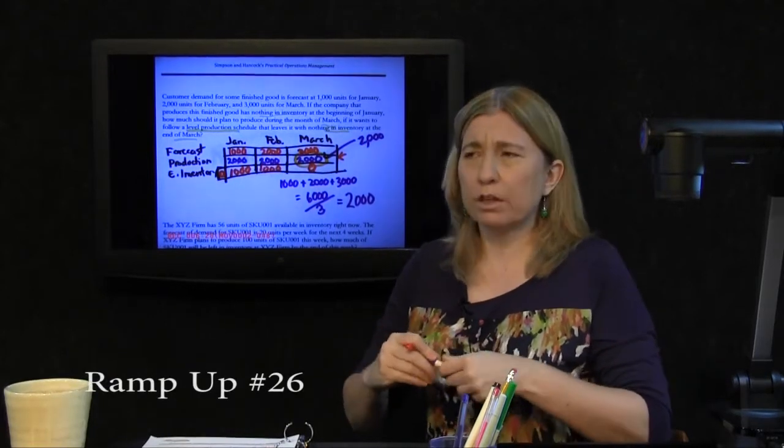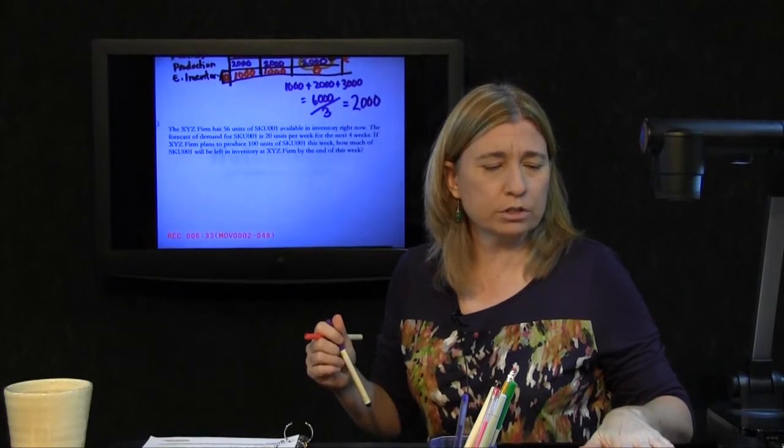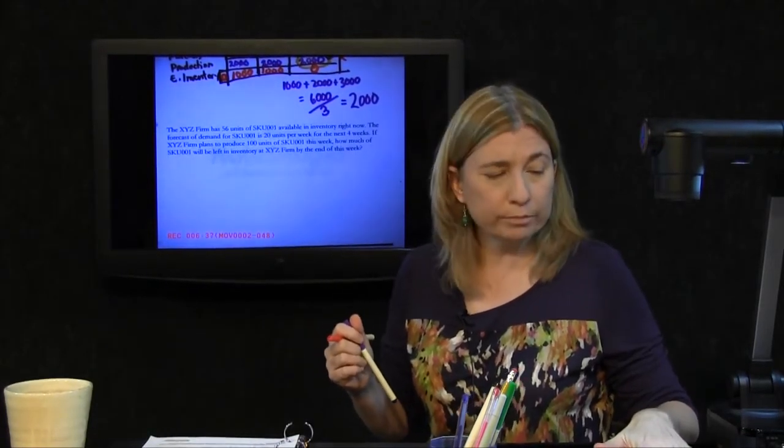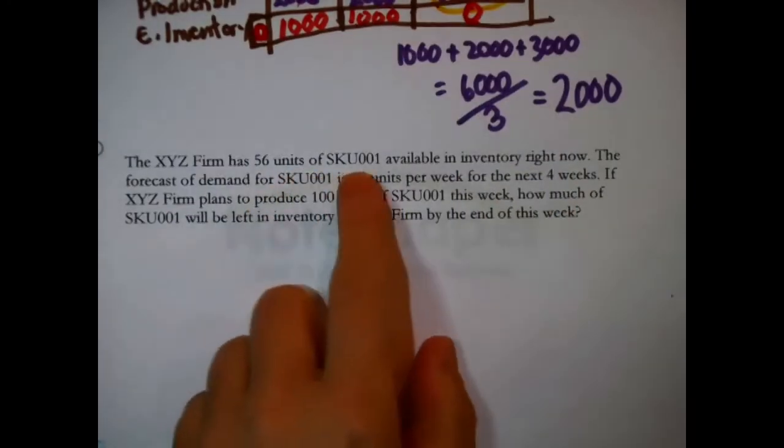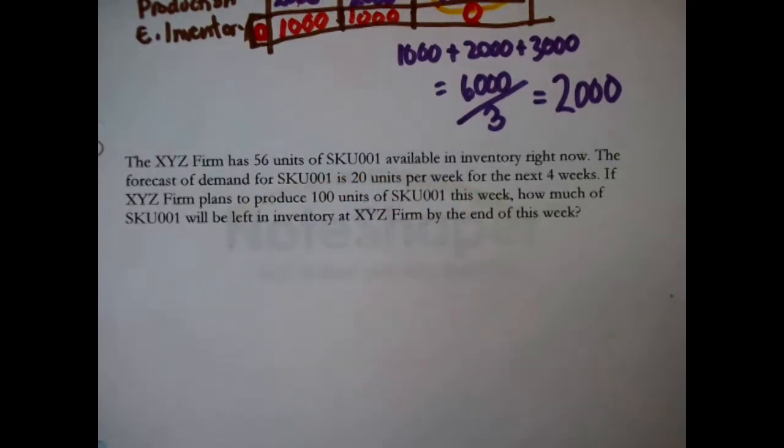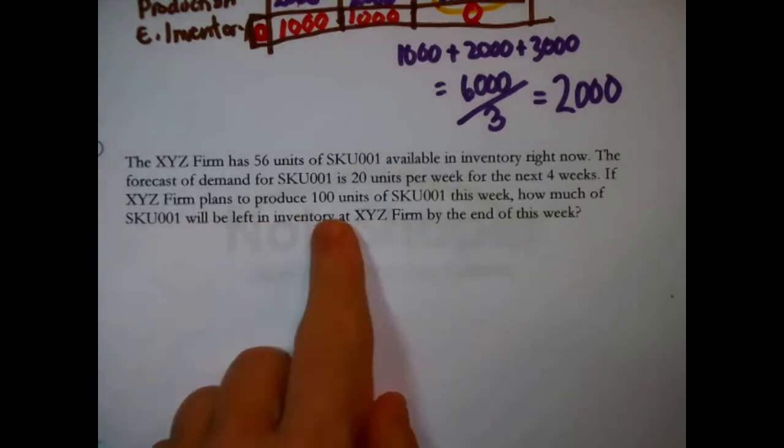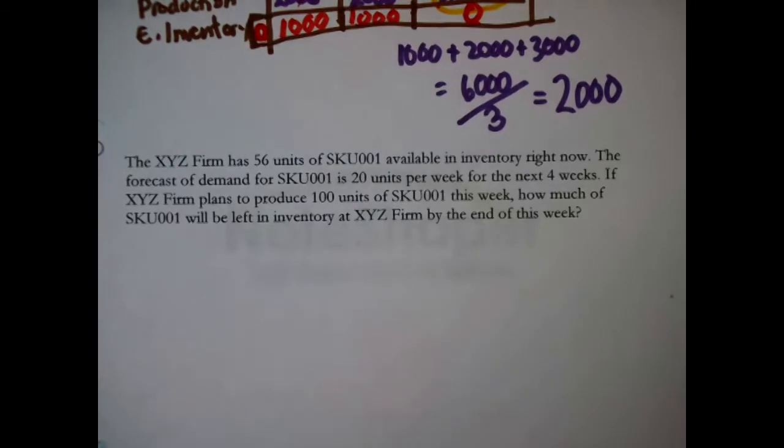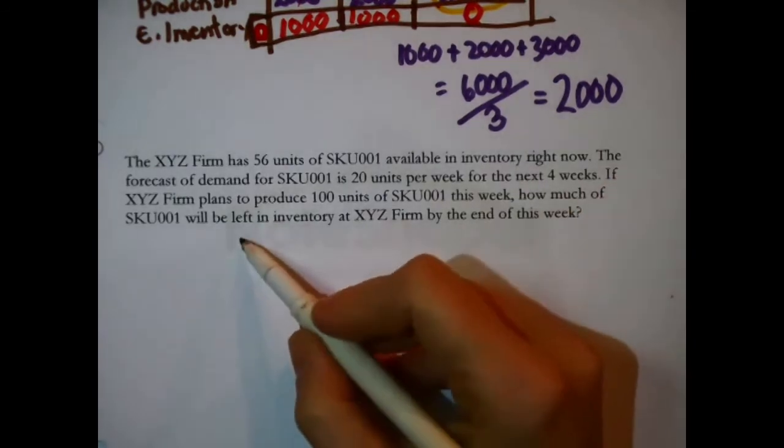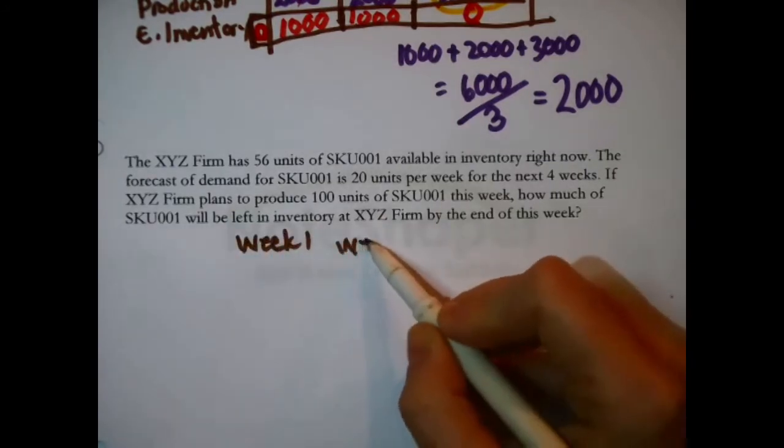The problem after this one is another case where you might just figure this out in the margin, but again, I would draw a table. Let's take a look. The XYZ firm has 56 units of SKU-001 available in inventory right now. The forecast of demand for SKU-001 is 20 units per week for the next 4 weeks. I see plans to produce some certain week—again, a table. Maybe I can draw this one neater. The column in an aggregate planning table is the time periods. What are the time periods here? We have right now, that's just a point in time, and we have a discussion of the next 4 weeks, although the question is only about the end of this week. For safety's sake, I'll do 4 weeks. I don't think we're going to need that.